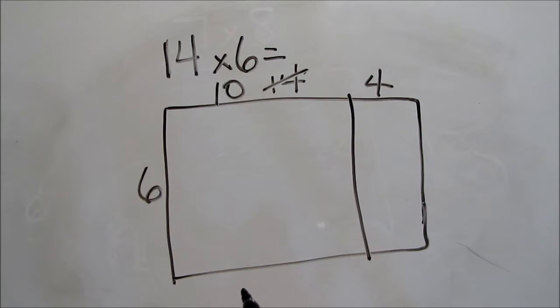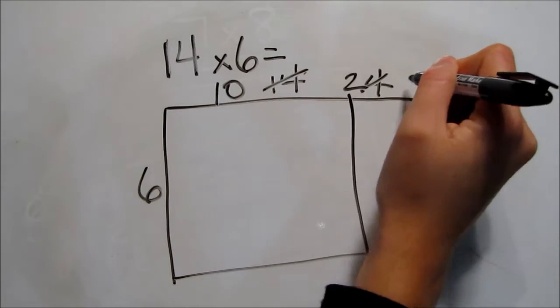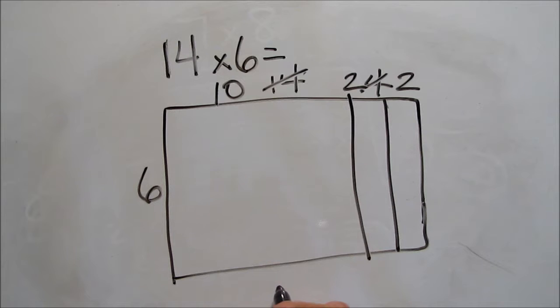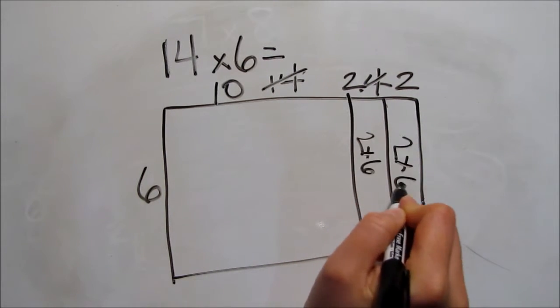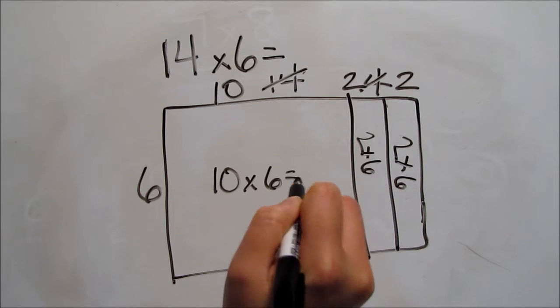I love numbers with zeros, but I'm feeling a little lazy, and I don't want to solve 4 times 6, so I'm going to break that 4 into two 2s. So, I have 2 times 6, 2 times 6, and 10 times 6.